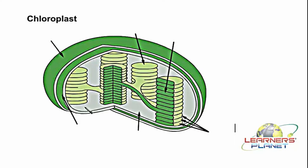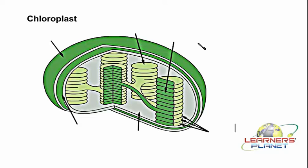This picture is of chloroplast. There are different types of plastids and chloroplast is one such example. If it is chloroplast, then the type of pigment present in this plastid is supposed to be chlorophyll. We are also discussing the side-wise structure of this organelle.